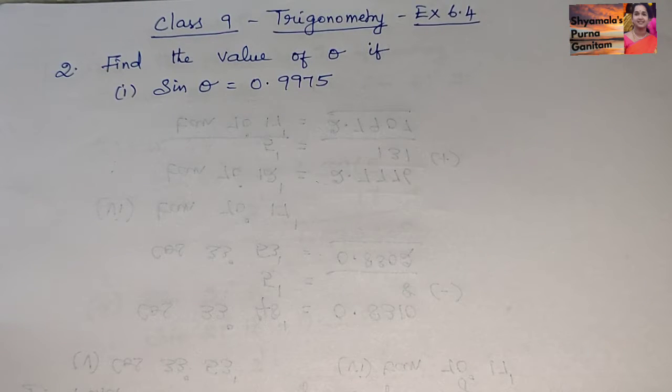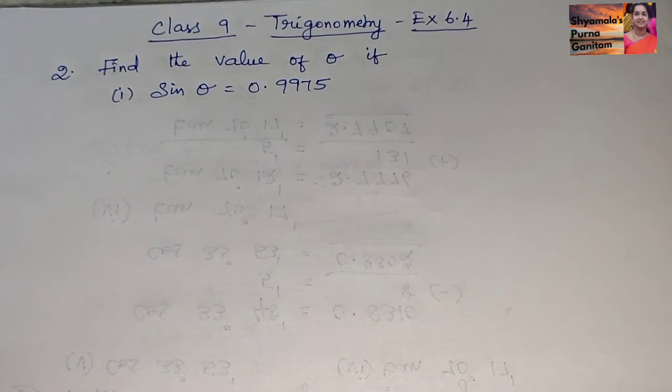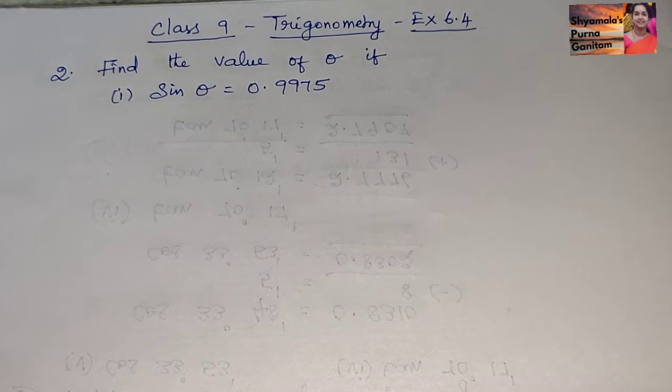Find the value of theta if sin theta is equal to 0.9975. So this is the thing given.